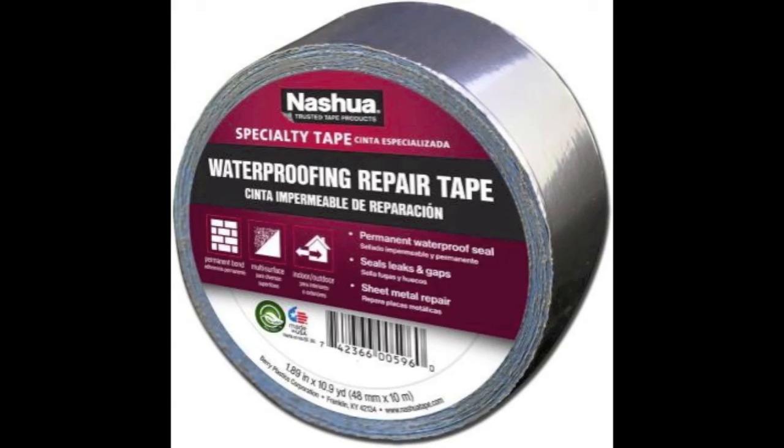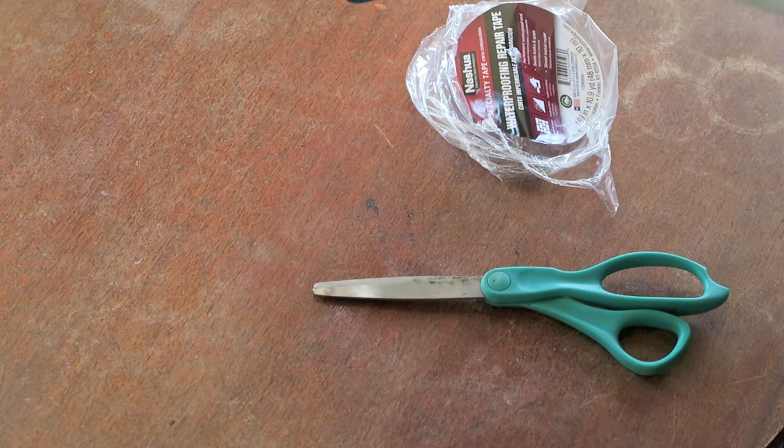First, you'll need a weatherproofing tape. We found this waterproofing repair tape at Home Depot in the heating duct aisle. We need less than three rolls to complete the project, and they cost about ten dollars each.